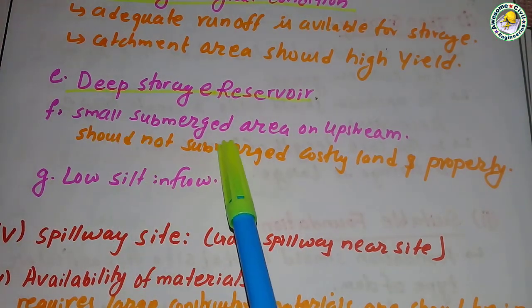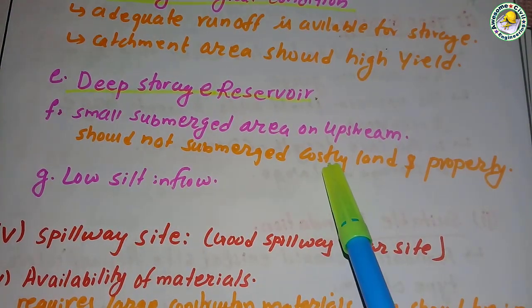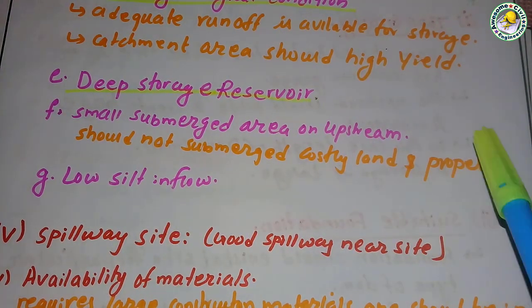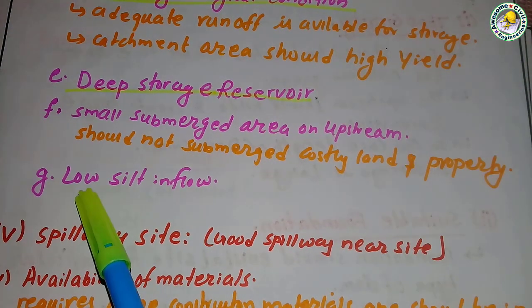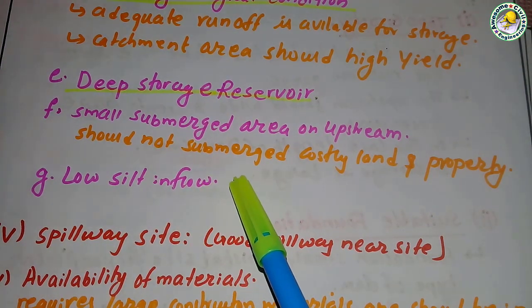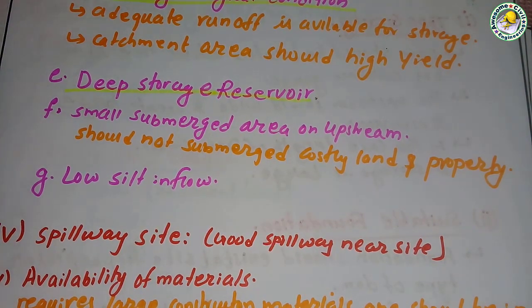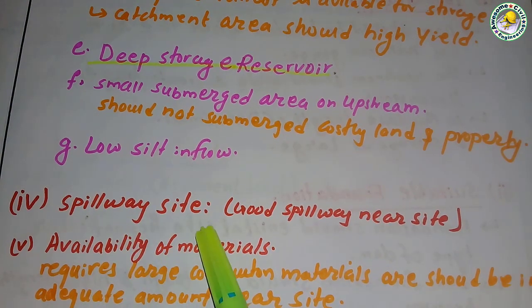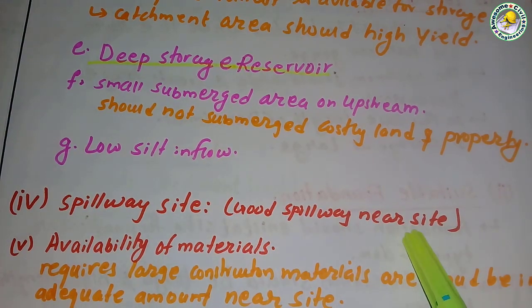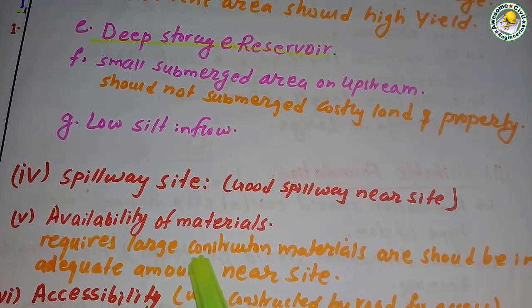Point F — small submerged area: the upstream should not submerge costly land and property. Point G — low silt inflow: the flowing of sediment in the upstream river should be minimum. Number four — there should be a good spillway site nearby.